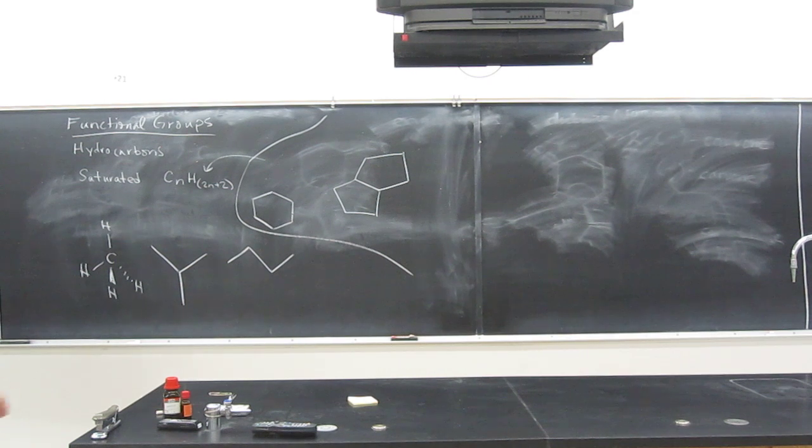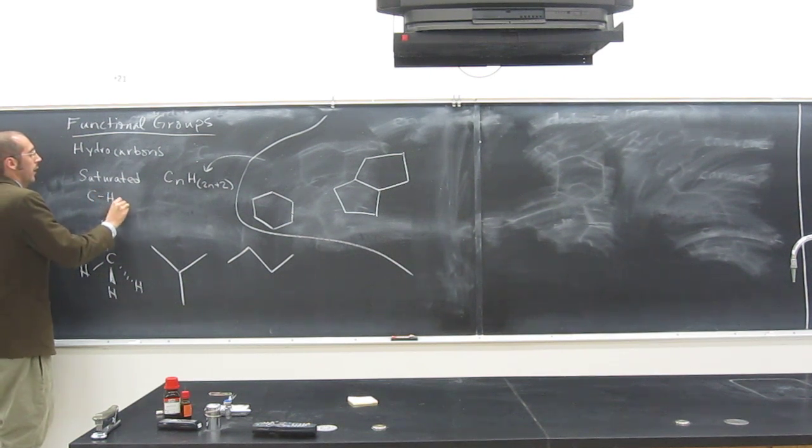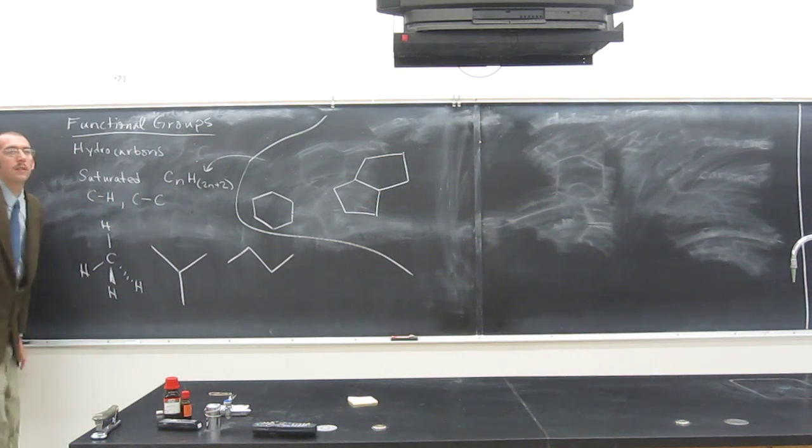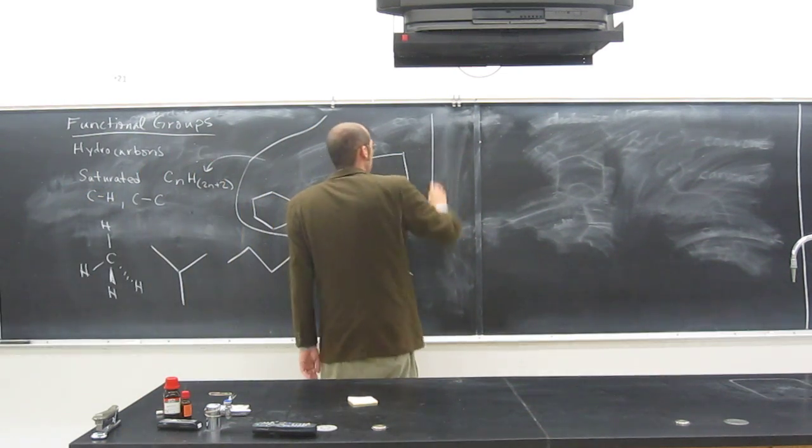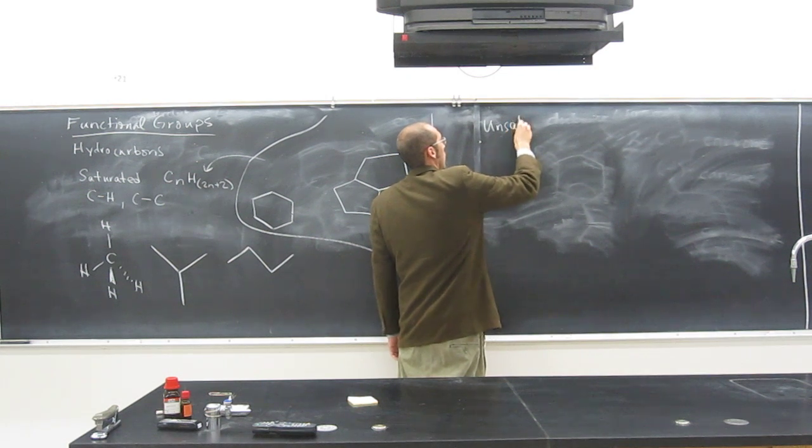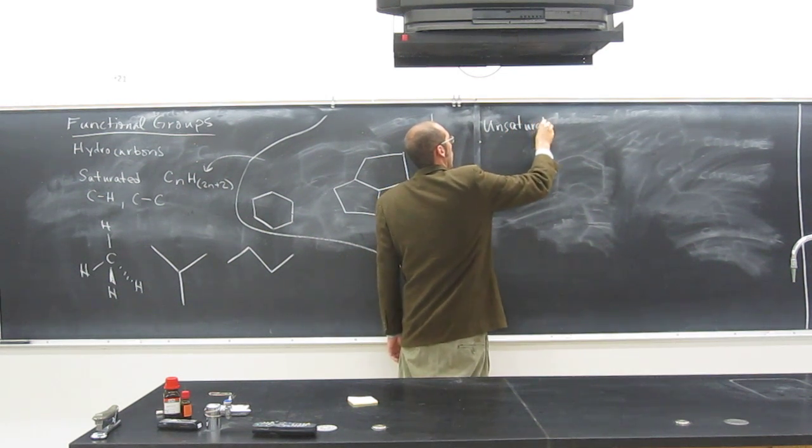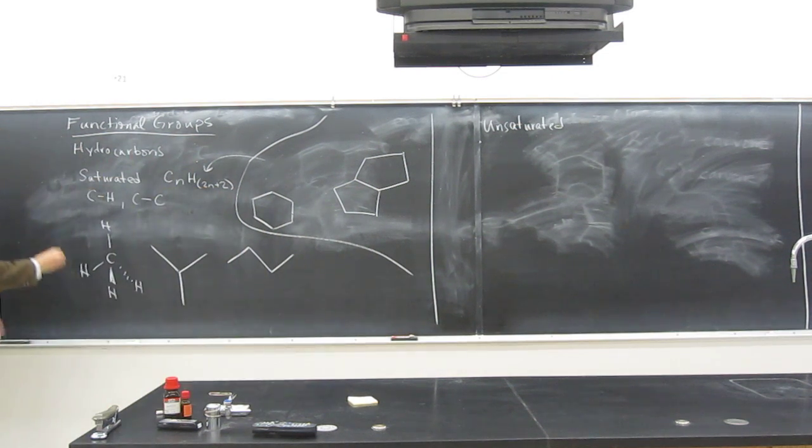There are other types of hydrocarbons, not just saturated ones. Saturated have only CH and CC single bonds like that. But we have unsaturated ones. All the saturated ones are called alkanes.